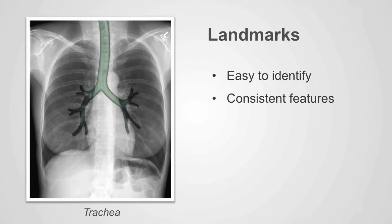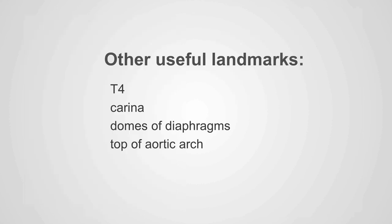One of the keys to identification of specific anatomical structures in the chest is through the recognition of important landmarks. A landmark should be easy to distinguish on a grayscale image, easy to identify, and should have consistent features. An anatomical structure that meets these criteria is the trachea. Other useful landmarks to be discussed in further presentations are the fourth thoracic vertebral body, the carina, the domes of the diaphragms, and the top of the aortic arch.